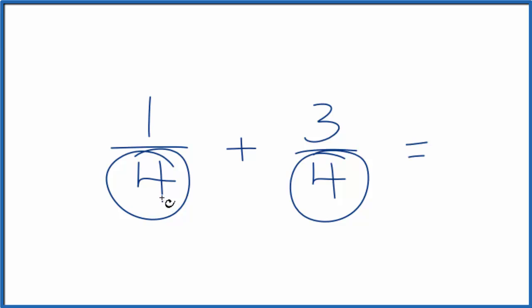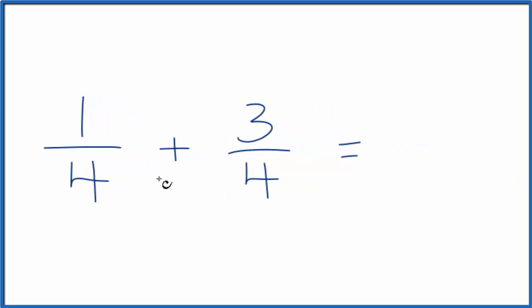In this case, we have four for the denominators for both of these fractions. So what we can do then is we can just bring that four across there, and we're going to add one plus three. One plus three is four.